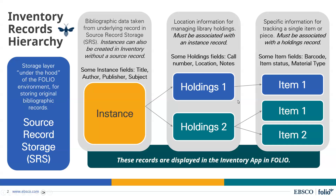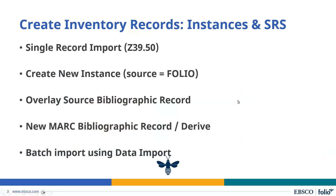Moving on, I have five different types of cataloging options I want to share with you today, and we'll go through them one by one. When we say inventory, it refers to the app within FOLIO that manages your bibliographic records. These five ways include creating source record storage records — which have a MARC record underneath — or sometimes just creating an instance record without any MARC underlying it.